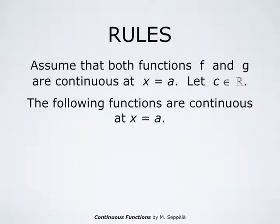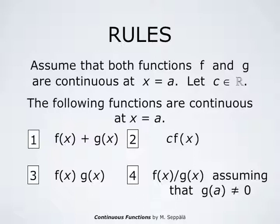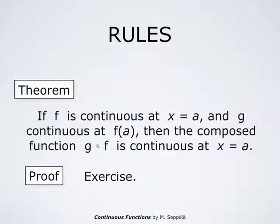From the properties of limits it follows further that if f and g are continuous at x equals a and c is a real number, then the following functions are continuous at x equals a: f of x plus g of x, c times f of x, f of x times g of x, and f of x divided by g of x assuming that g at a is different from zero. If g at a is zero, then f of x divided by g of x is not a number. One can also show that if f is continuous at x equals a and g is continuous at f at a, then the composed function g composed with f is continuous at x equals a. The proof uses the definition of continuity twice and is left as an exercise.